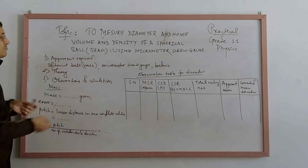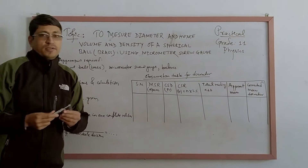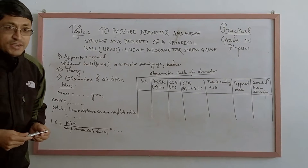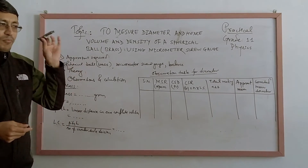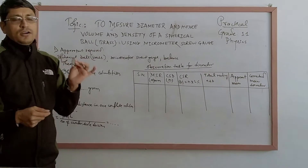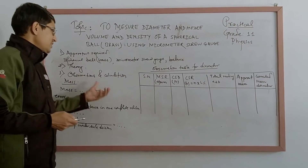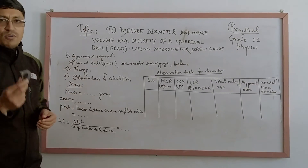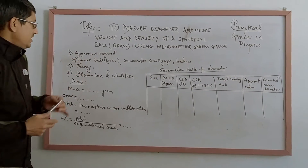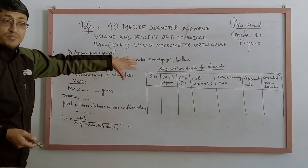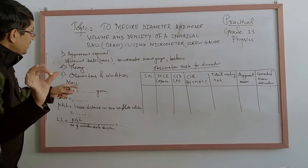This is a micrometer spherical volume. I am going to use the solid cylinder. The least count is 0.01 mm. A spherical glass bulb is used for this experiment.